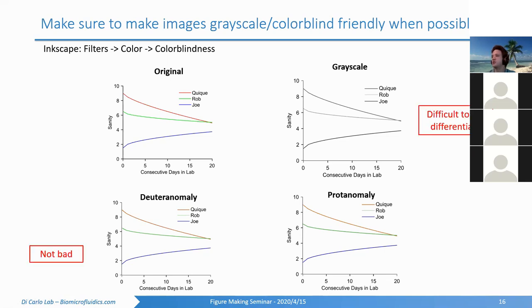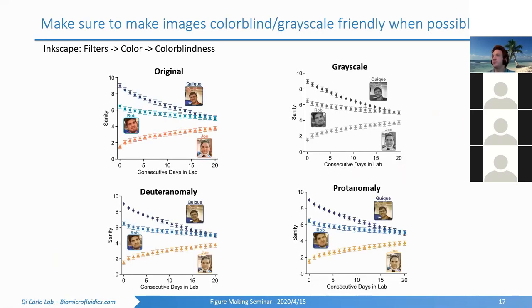Going back to our example, on grayscale we can distinguish these things because the markers are different — triangles, squares, circles — and the shades are distinguishable enough. One thing I could improve is it's not clear which marker shape goes with which picture legend. That could be slightly improved, but at least the colors are distinguishable.